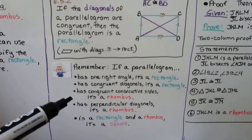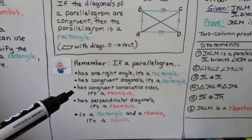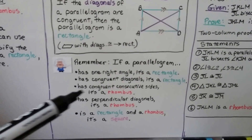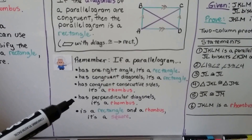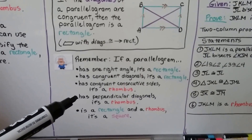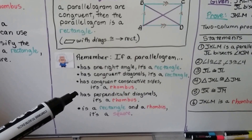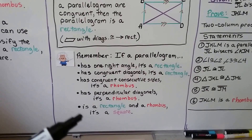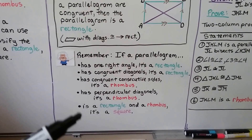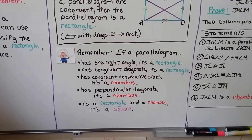If a parallelogram has congruent consecutive sides, it's a rhombus. Or if it has perpendicular diagonals, it's a rhombus. And if a parallelogram is both a rectangle and a rhombus, it's a square.